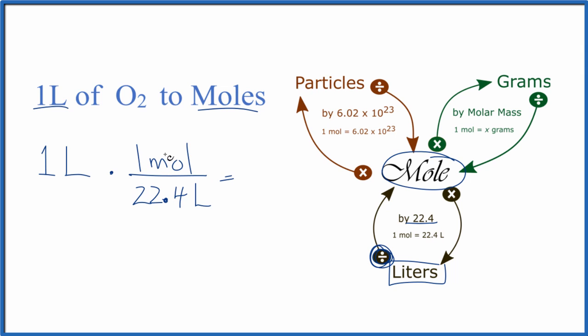So now, when we multiply the top and divide by the bottom, we're still dividing one by 22.4. See, our liters cancel out. We're going to be left with moles, and we get the same answer we got before, 0.045 moles.